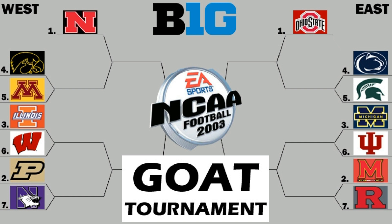Here's the bracket. I know people ask why Nebraska is in this tournament since they weren't in the Big 10 in 2002 — we're going with today's conferences for all the tournaments so it's an even playing field. With the point system we have in place, it's only fair that everyone competes against the same teams. Nebraska is the one seed in the West, Iowa will host Minnesota, Illinois will host Wisconsin, and Purdue is the two seed — they will host Northwestern.